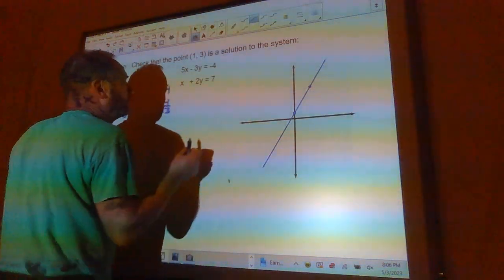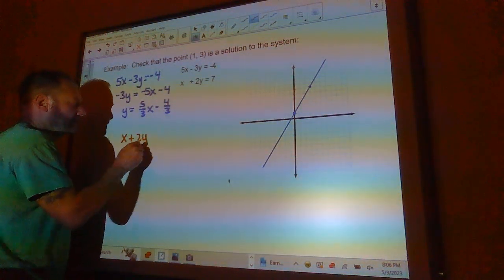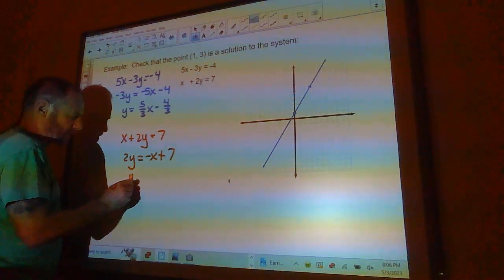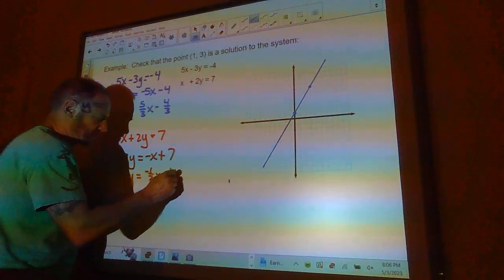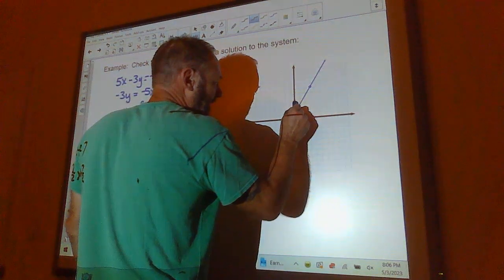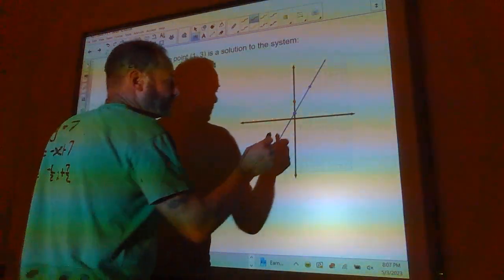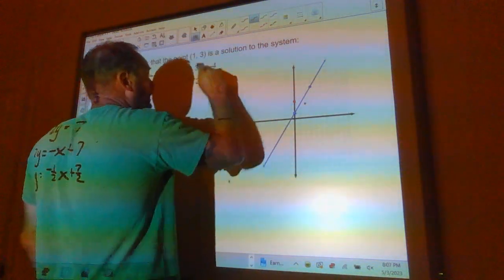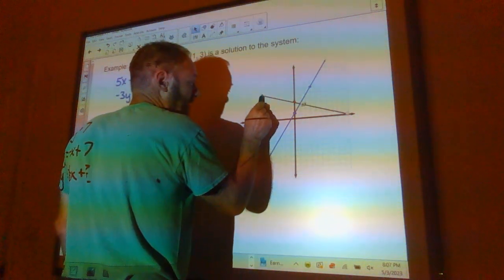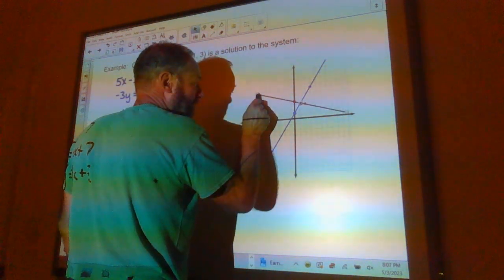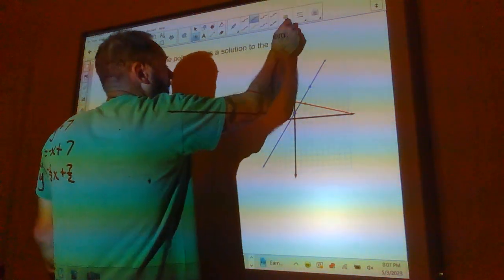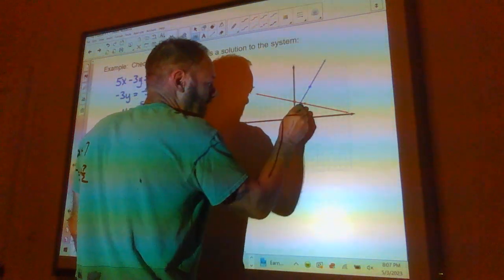Now the second line, X plus 2Y is 7. So 2Y is negative X plus 7. So Y is negative 1 half X plus 7 halves. That's 3 and a half. 1, 2, 3 and a half, right there. Slope is going to be down 1 to the right 2. This line right here.